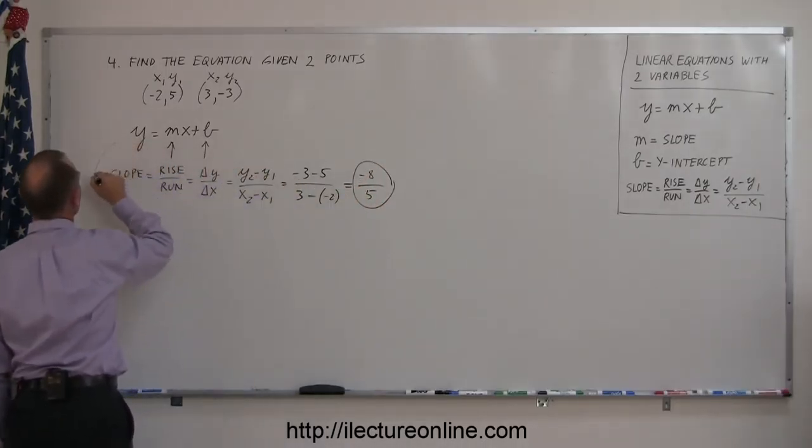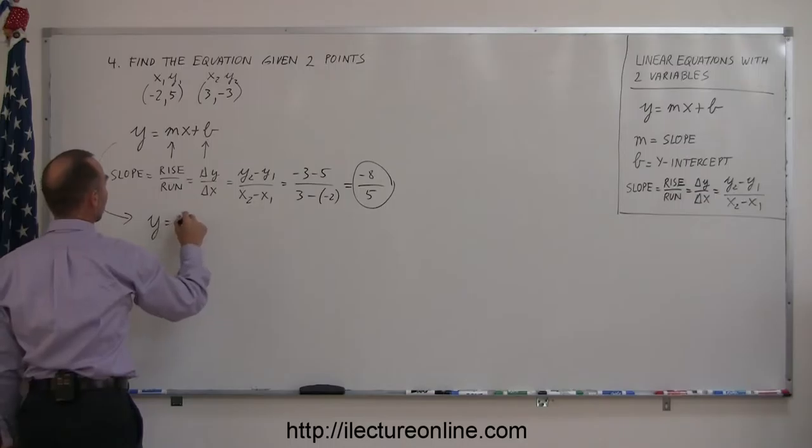So we can go ahead and plug that in here, and the equation now looks like y equals negative 8 over 5x plus b.